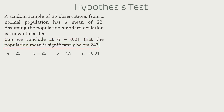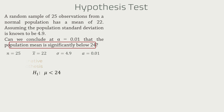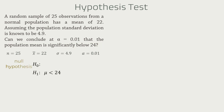Since we're testing if the population mean is below 24, the alternative hypothesis will be that the population mean mu is less than 24. For the null hypothesis, we will simply assume that there has been no change in the population mean, so that mu equals 24.